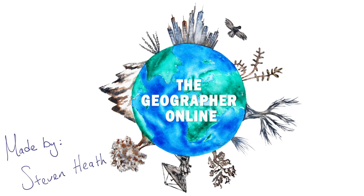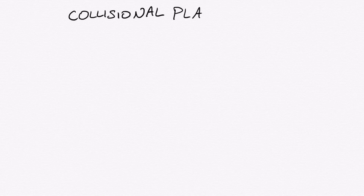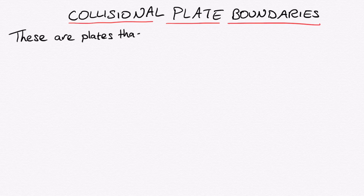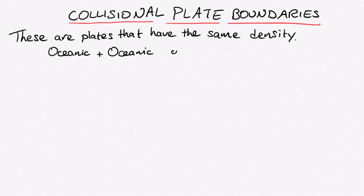Hello everyone. In this plate tectonics video we're going to be looking at a convergent plate movement, specifically a collisional plate boundary. With collisional plate boundaries it's important to remember that the plates have the same density, so they have to be oceanic and oceanic, or continental and continental.